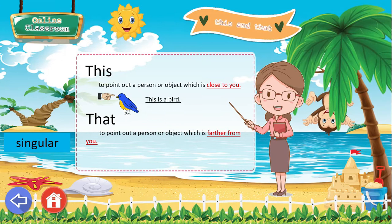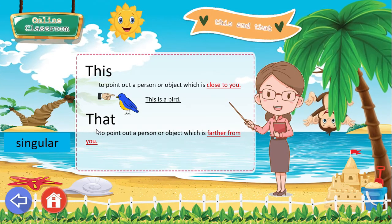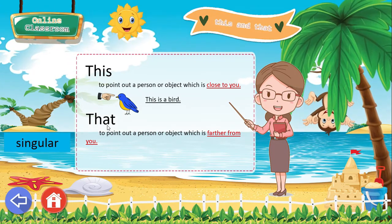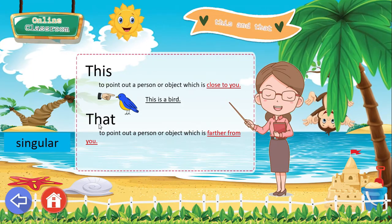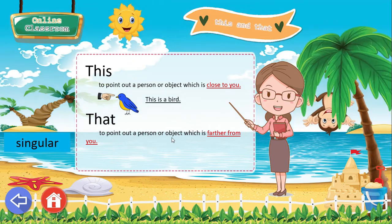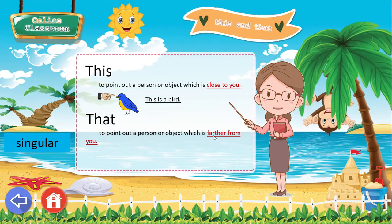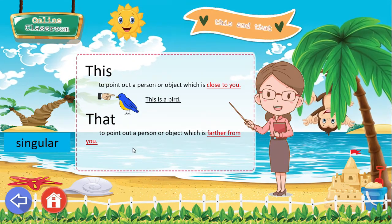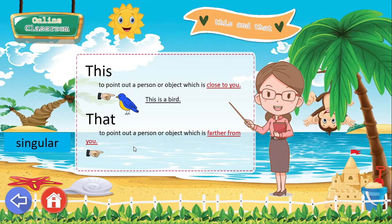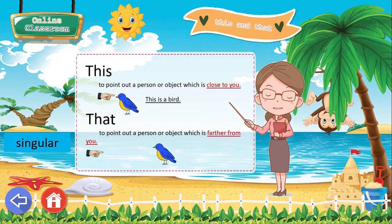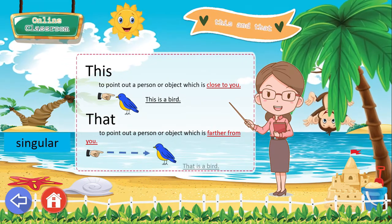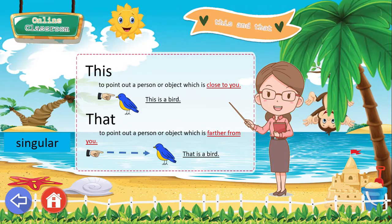And you are going to use the word 'that' — that's T-H-A-T — to point out a person or object which is farther from you. For example, this one: That is a bird.